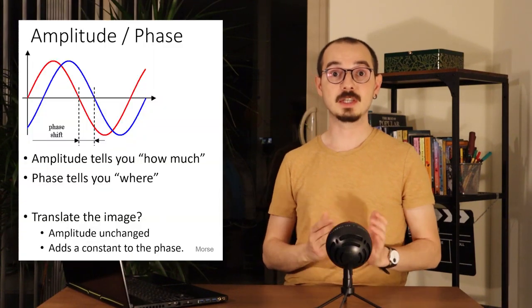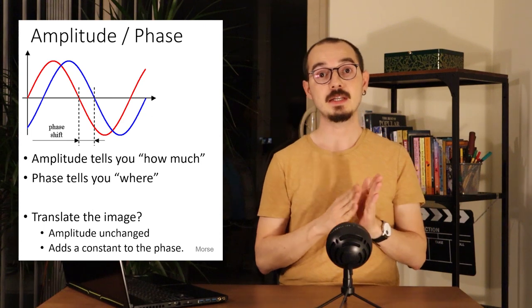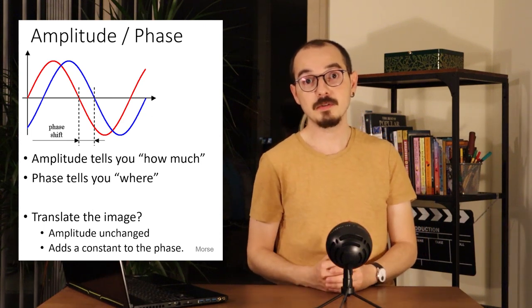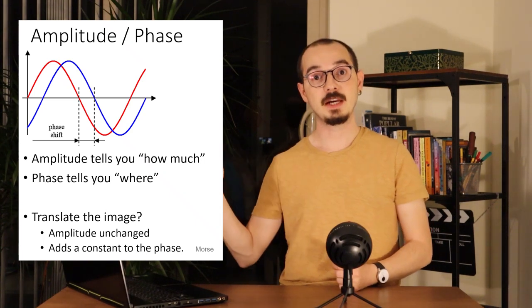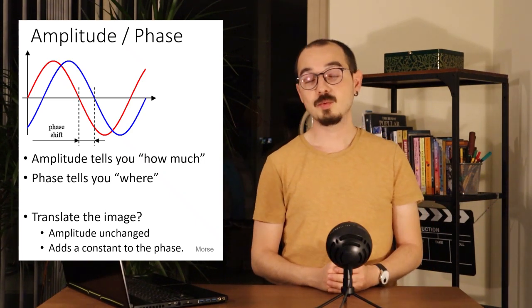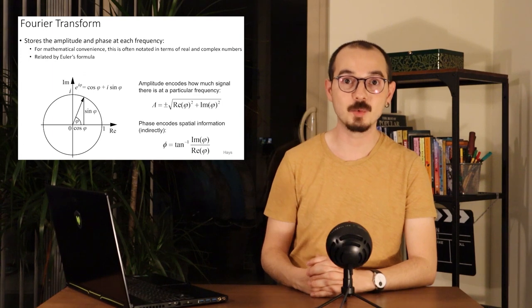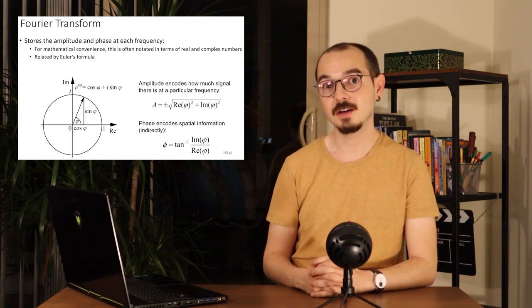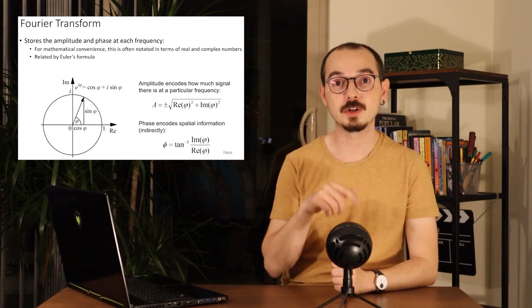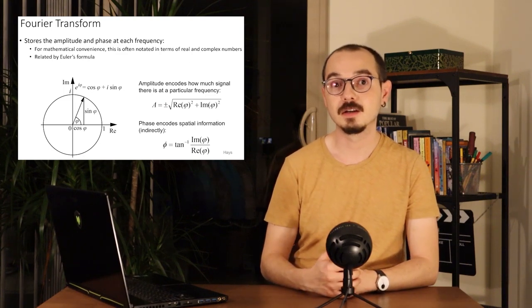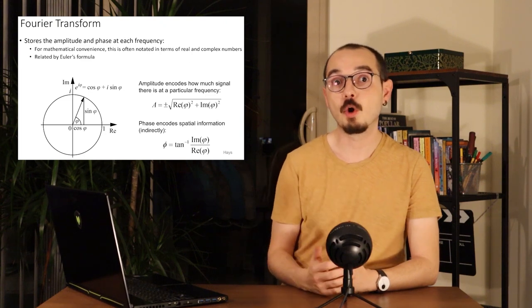The frequency domain representation, or the Fourier transform of the image, is actually a complex number. This is because the sine waves have a frequency as well as a phase. The phase of a sine wave is essentially a shift in the spatial domain. When we compute the frequency domain representation of images, that is why we get complex numbers. Complex numbers, phase, and frequency of a sine wave are related through the Euler formula, which comes from the unit circle definition of sine and cosine together with the definition of complex numbers.